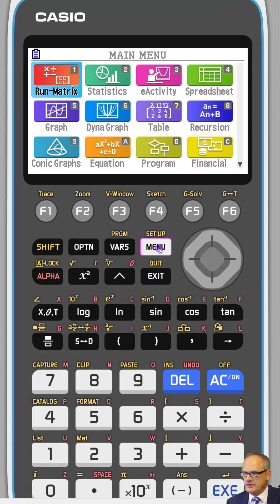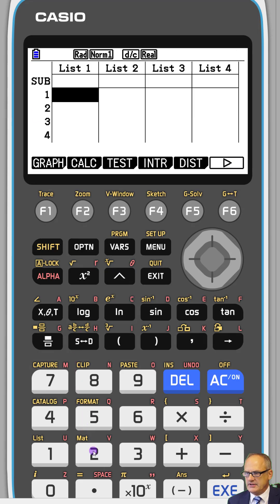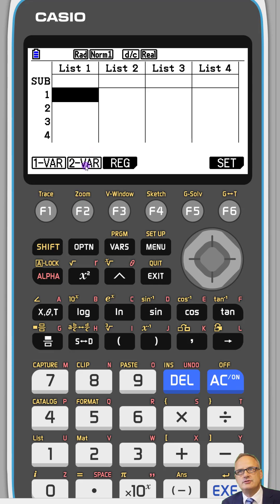So what we do is we go menu two for the stats. And what we're going to do is we want to do calculations and we've got two variables. When you're doing correlation, you're looking at an X and a Y correlation. So therefore, you want two variables.